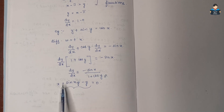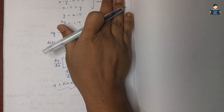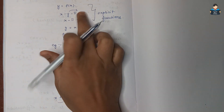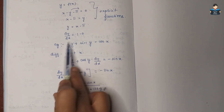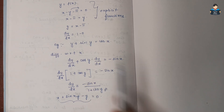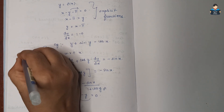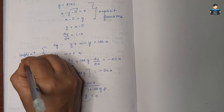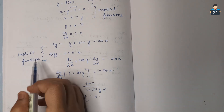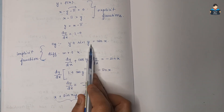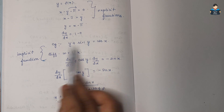So when we differentiate with respect to x, explicit functions are clear — direct, detailed, straight away expressed in that form. We call those explicit functions. And when both x and y terms are present together in the equation, we call those implicit functions.